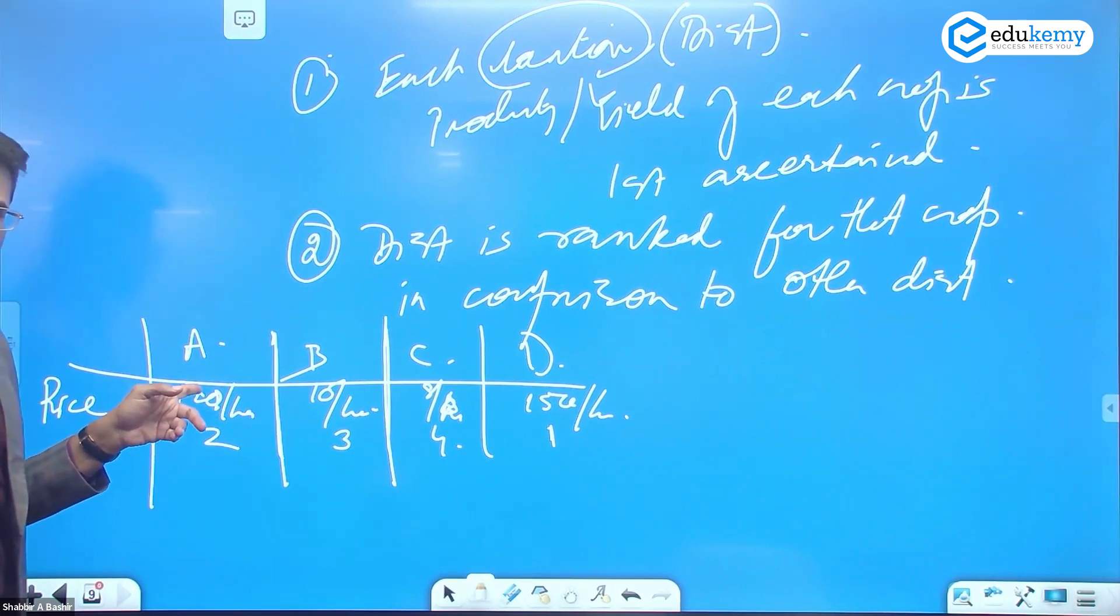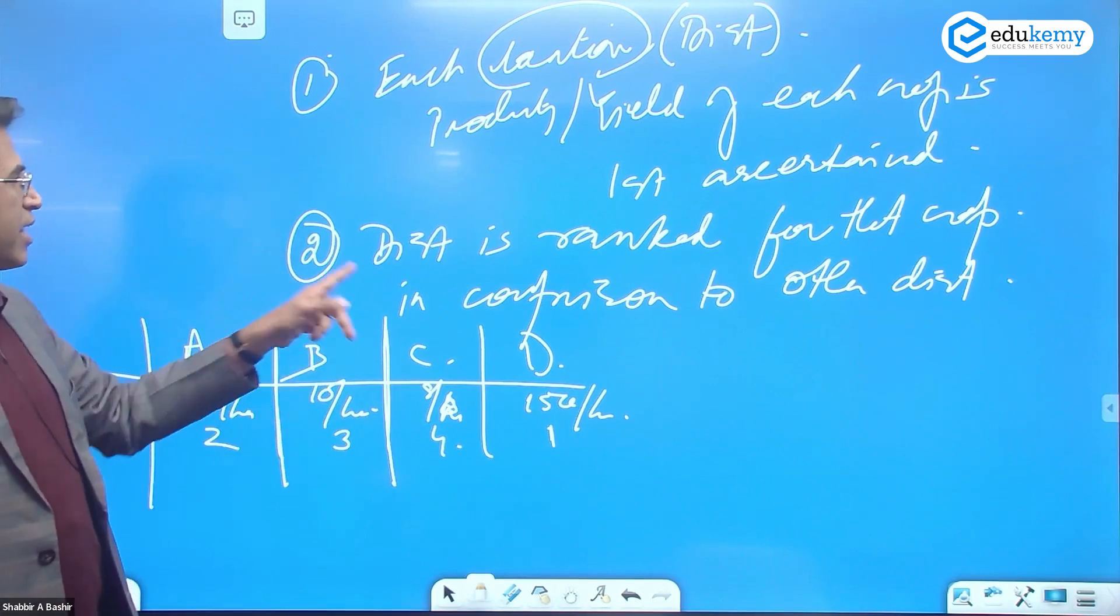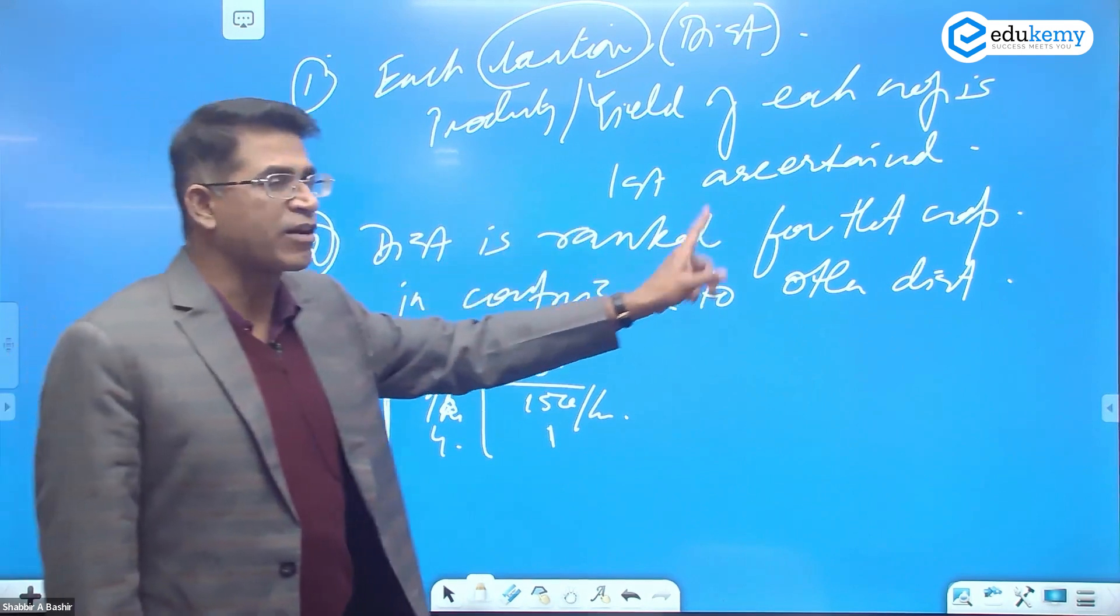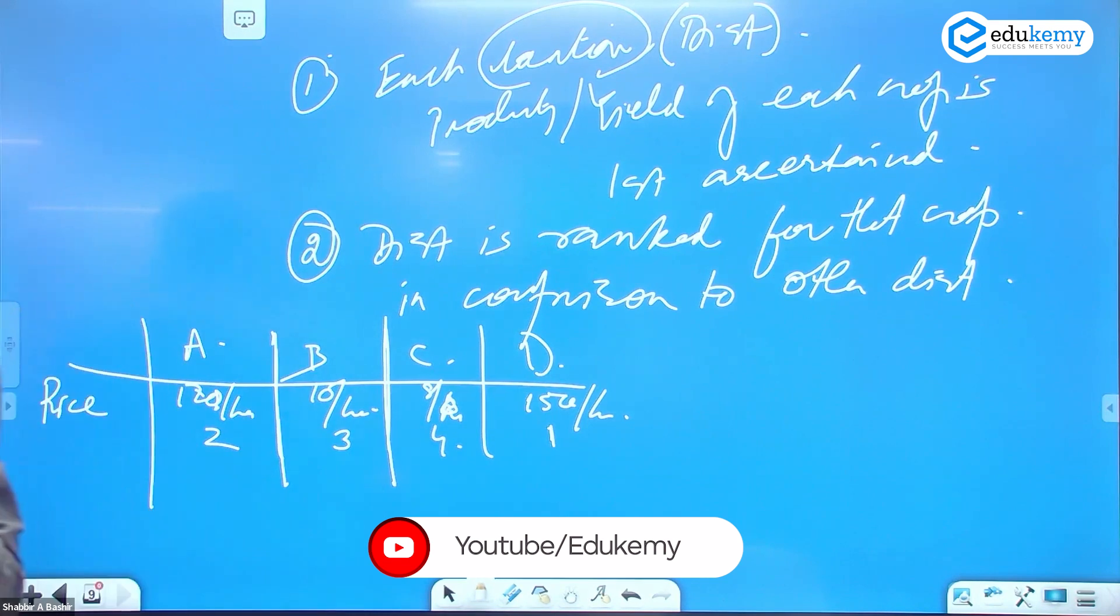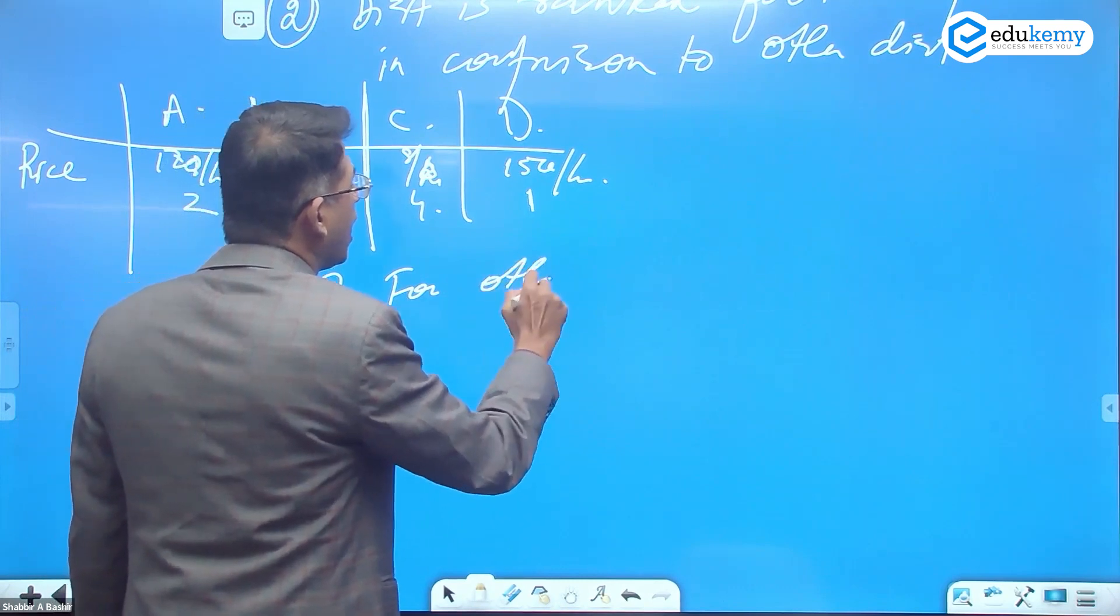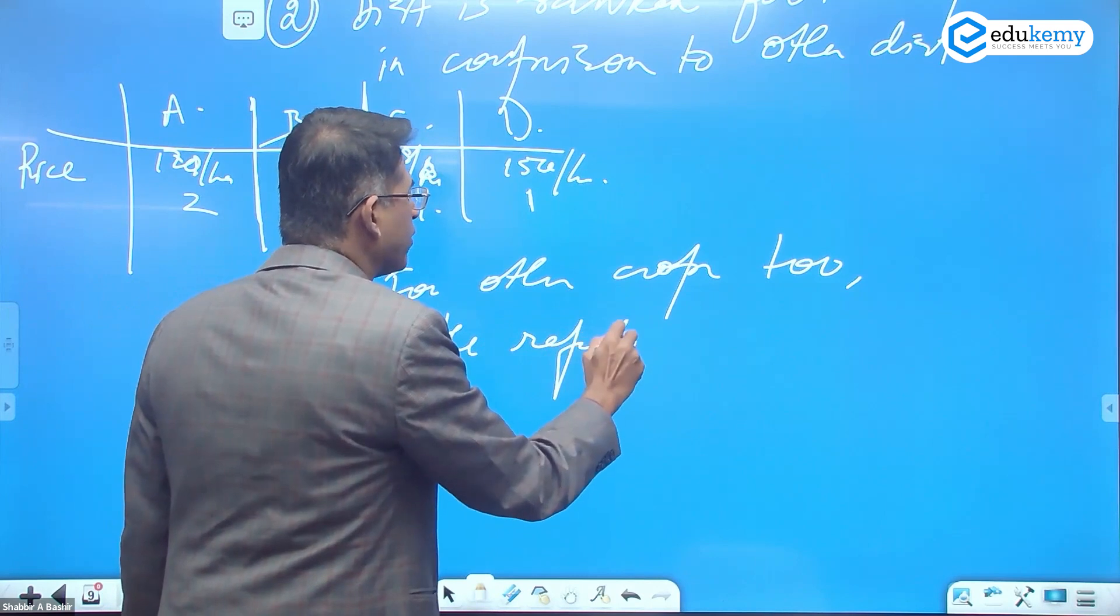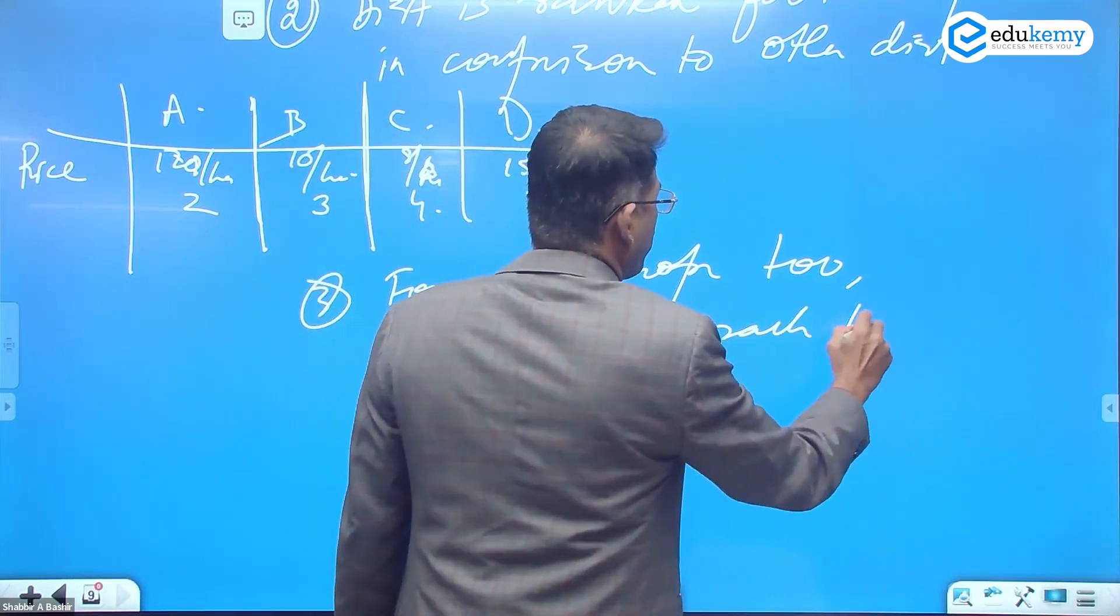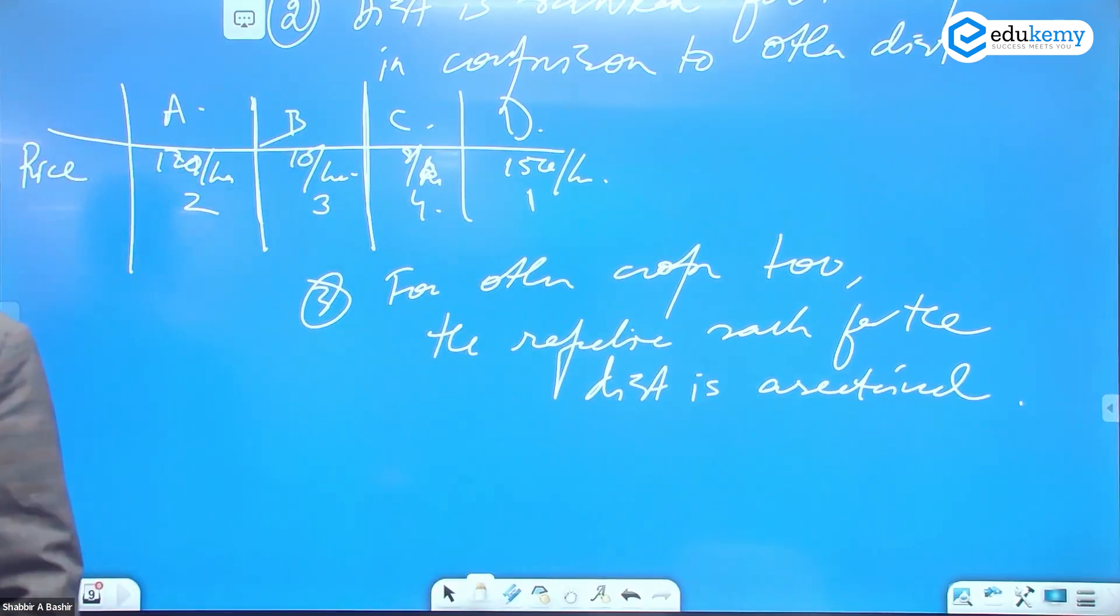The third step is: for the other crops, the respective ranks for the districts are ascertained. For other crops, the respective rank of the district is ascertained.